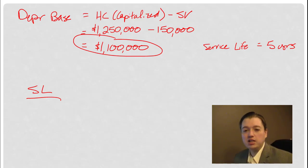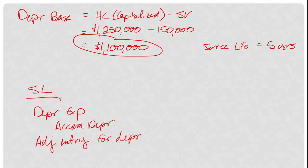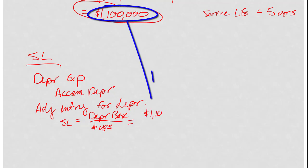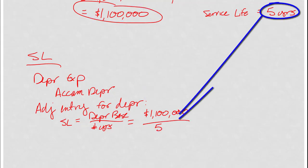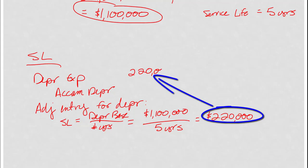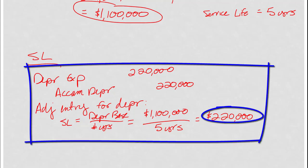Let's set this up and slip the calculation in as part of the description. We're going to debit depreciation expense and credit accumulated depreciation — this is an adjusting entry for depreciation. For straight-line, that's the depreciation base divided by the number of years in our service life. Our depreciation base is $1,100,000 and service life is five years, so each year we depreciate $220,000. Now I have not only my depreciation expense calculated, but a journal entry as well — and that's straight-line.